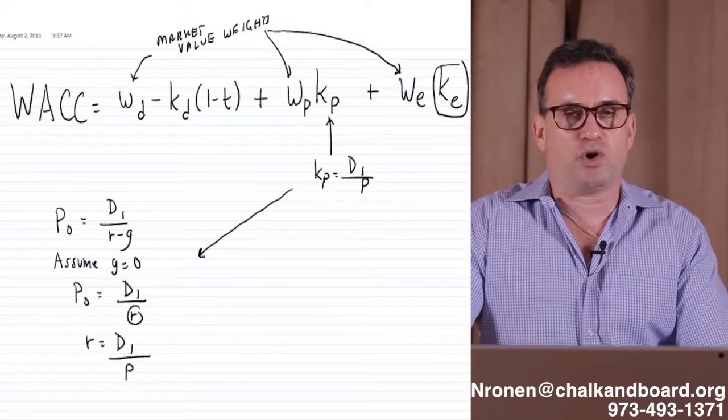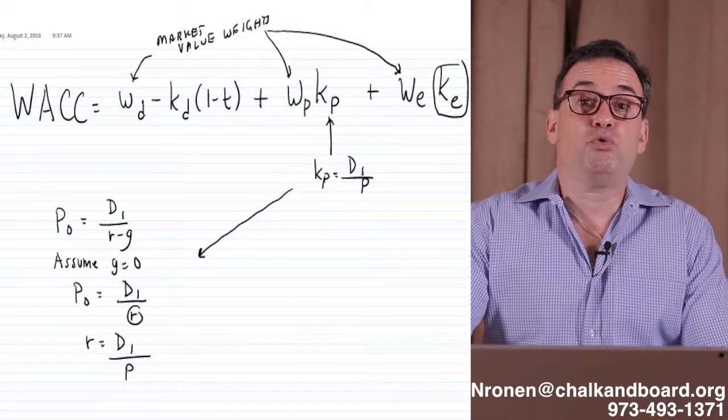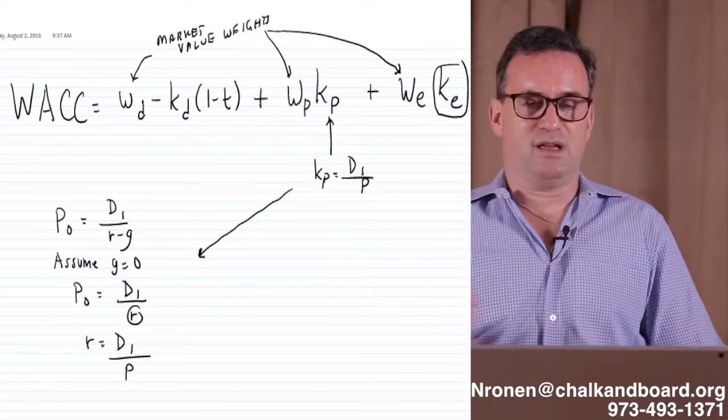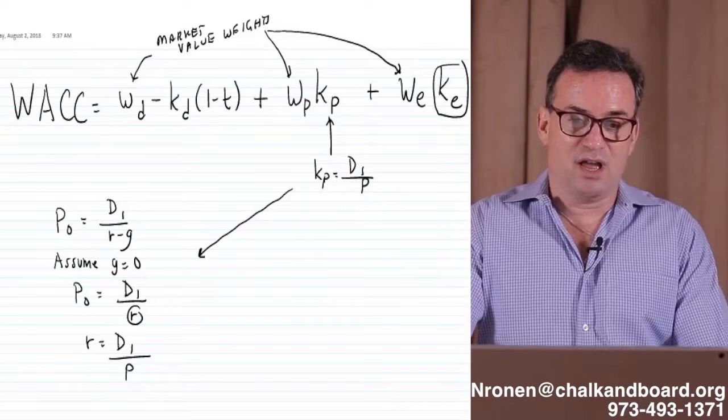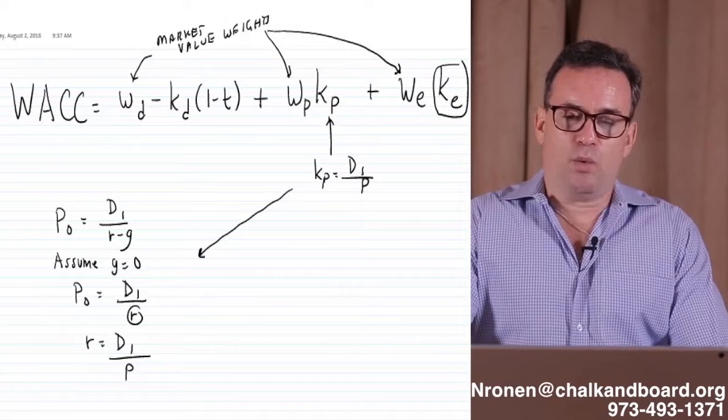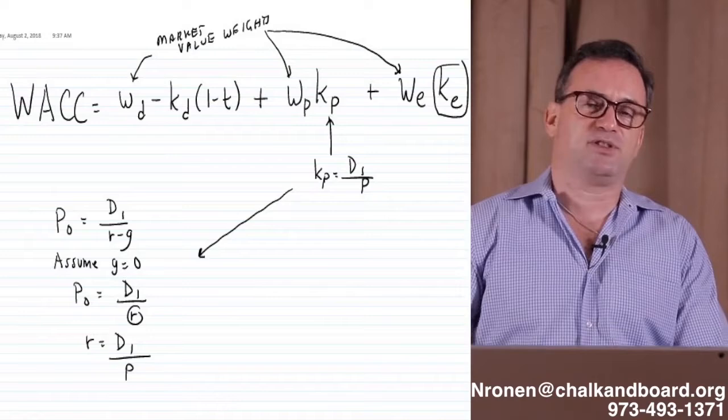So the weighted average cost of capital, you can see the formula is the weight of the debt times the pre-tax cost of the debt times one minus T. So when we take the pre-tax cost of debt and we multiply by one minus T, that gives us the after-tax cost of debt times the weight of the debt. And then we're going to add to that the weight of the preferred shares, if the company has preferred shares, times the cost of the preferred shares, plus the weight of the common shares times the cost of those retained earnings, the cost of the existing shares.